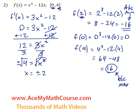And the absolute maximum happens within this interval at x equals 4, and the value is 16. That's it.